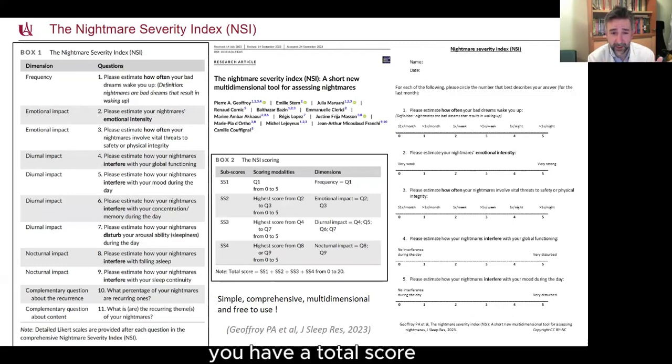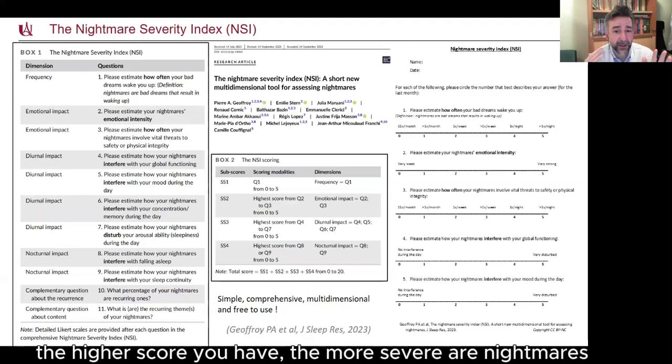So this is very simple. You have a total score which is calculated using the higher score in each subscore on questions with the higher score. So the maximum is 20 and the minimum is zero. The higher score you have, the more severe are nightmares.